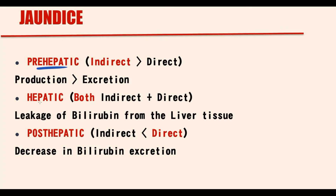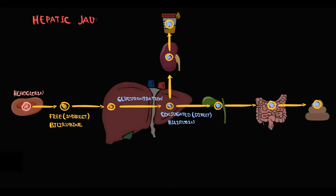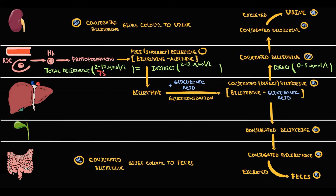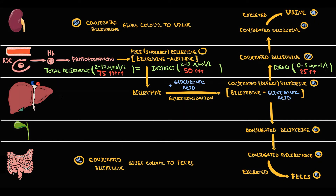The second pattern is increasing both direct bilirubin and indirect bilirubin, also classified as hepatic jaundice. Hepatic jaundice occurs due to liver injury. In this case, both free bilirubin and conjugated bilirubin leak from the liver tissue into the blood, causing an increase in both. For example, total bilirubin is 75 — significantly higher than normal — and looking at fractions, this elevation is caused by increasing both unconjugated and conjugated bilirubin. The most common cause is liver damage due to drug-induced liver injury or hepatitis.